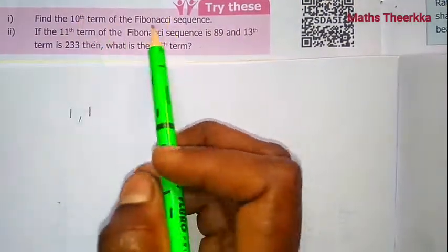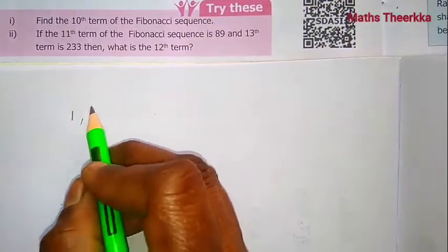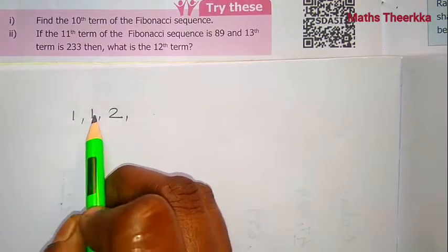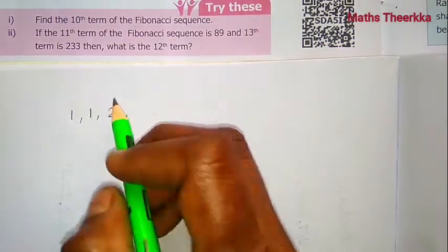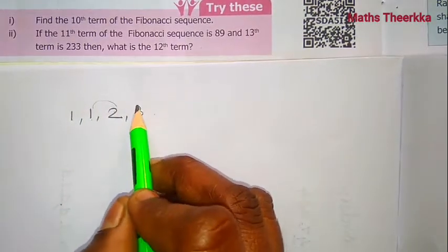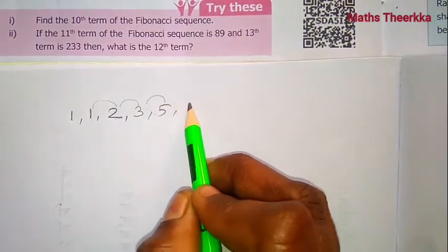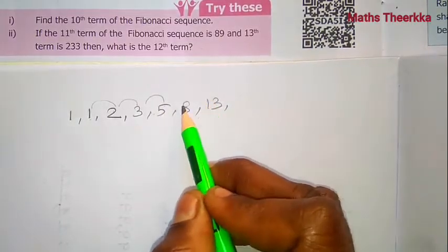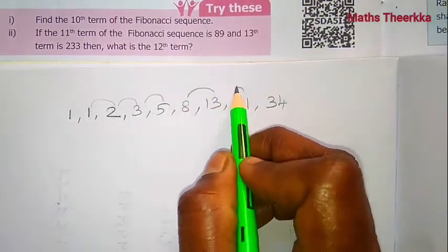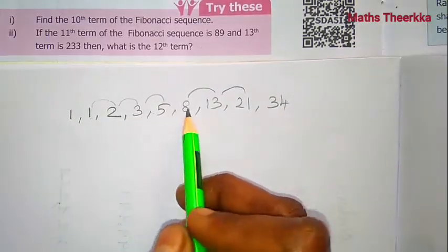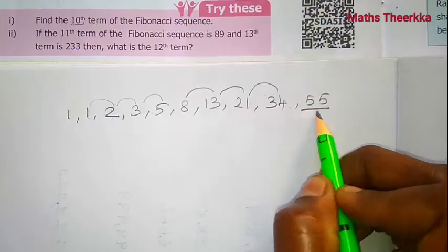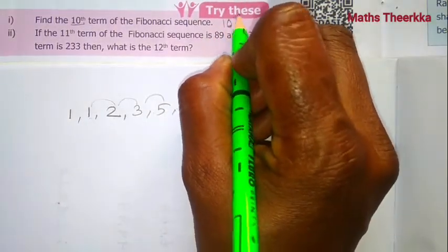Try this: find the 10th term of the Fibonacci sequence. The sequence is 1, 1, 2, 3, 5, 8, 13, 21, 34. Adding the previous two consecutive numbers: 34 plus 21 gives 55. So the 10th term is 55.